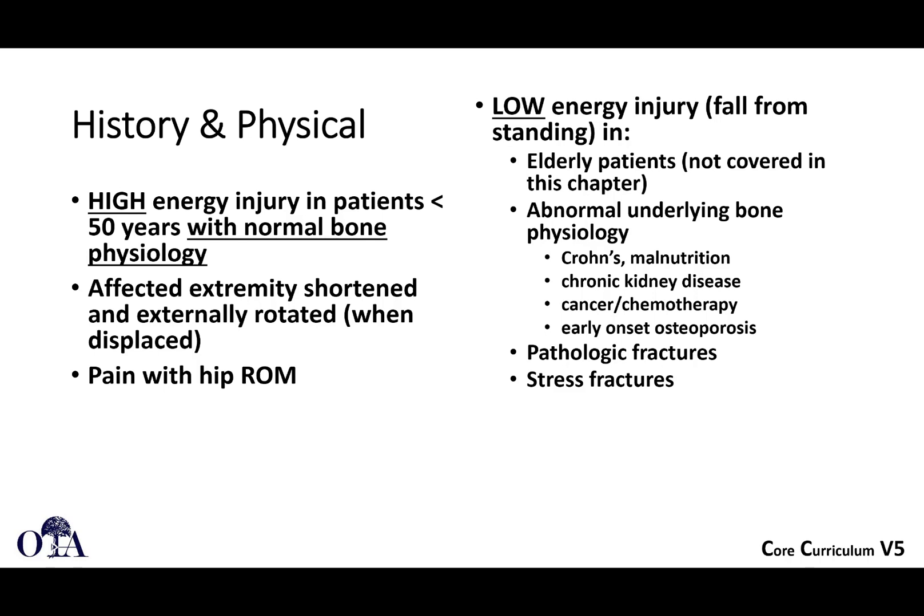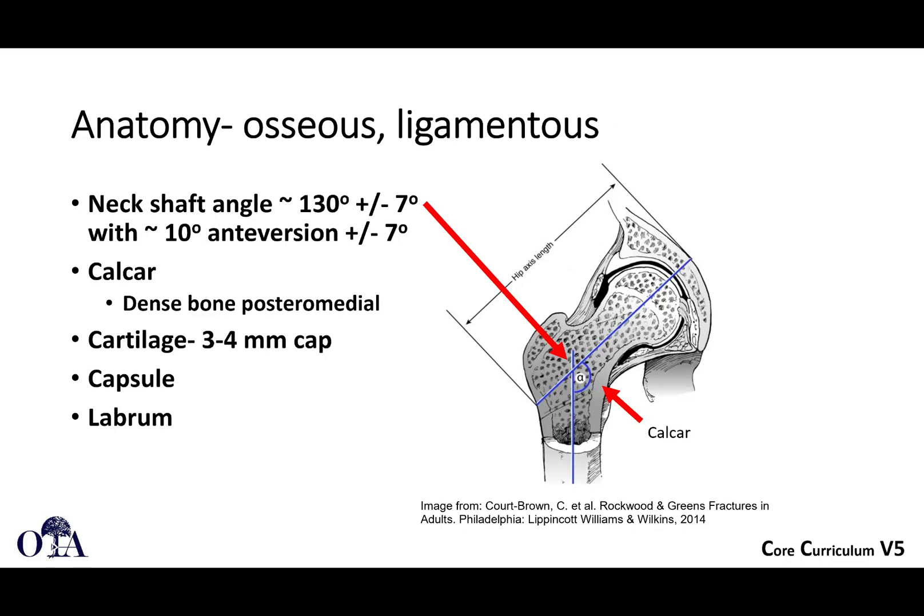Multiple disease states are listed as examples of abnormal bone. Pathological fractures and stress fractures will also be discussed. It's important to study the bony anatomy, understand the neck shaft angle, understand the concept of anteversion, and understand the thickening or dense bone that forms the calcar. The capsule and labrum are also important to understand.